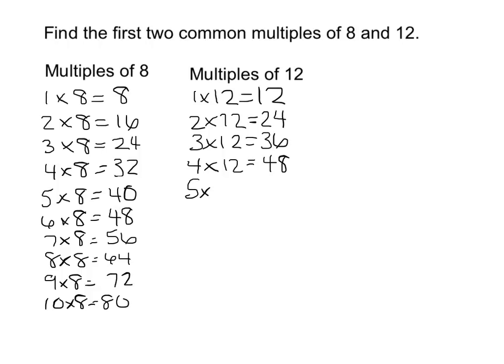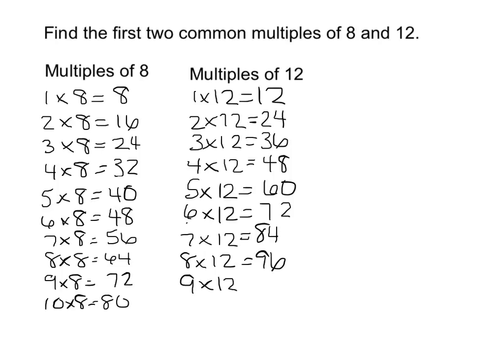4 times 12 is 48. 5 times 12 equals 60. 6 times 12 equals 72. 7 times 12 equals 84. 8 times 12 equals 96. 9 times 12 equals 108. And 10 times 12 equals 120.